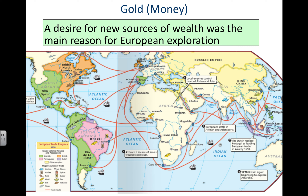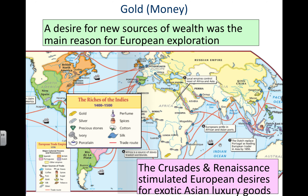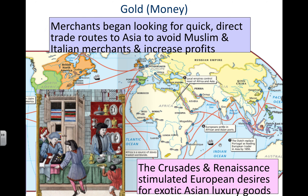Europeans didn't have gold, so they began to explore, looking for new ways to get these resources — perfumes, spices, cotton, precious stones, ivory, and porcelain. The Crusades and the Renaissance had stimulated this desire for exotic Asian luxury goods, but Europeans didn't have them, so they set sail for new seas and new places to get these resources.